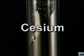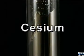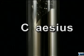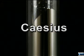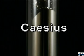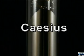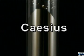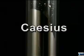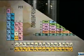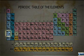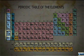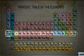Cesium gets its name from the Latin word caseus, which means sky blue — the color cesium produces when viewed through a spectroscope. Cesium is classified as an alkali metal and it lies in the periodic table's 6th row, period 6.